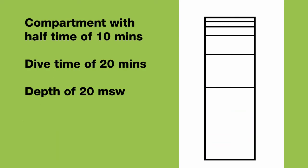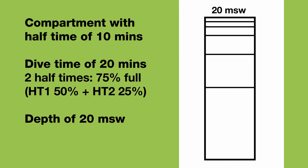Let's calculate the nitrogen load of a tissue during a real dive. We have a compartment with a half time of 10 minutes. We go for a dive of 20 minutes, and we dive to 20 meters. With a 10 minute half time, 20 minutes is 2 half times - 2 times 10 minutes.